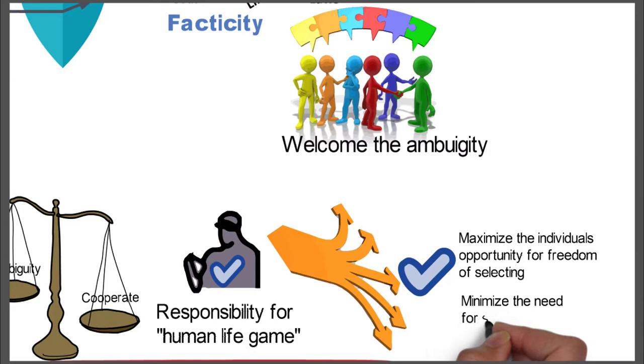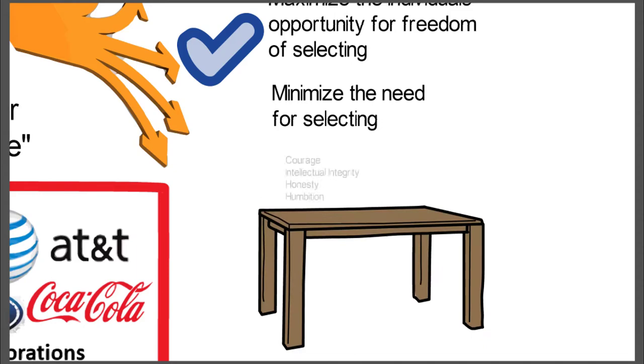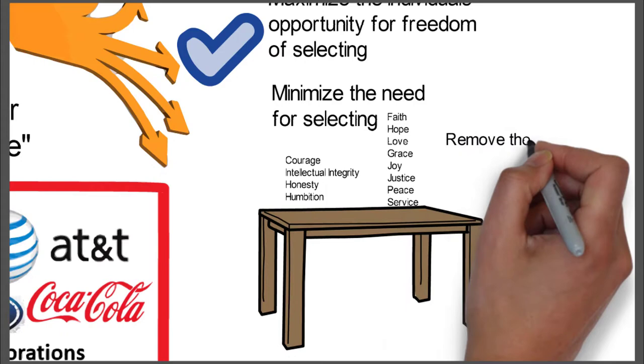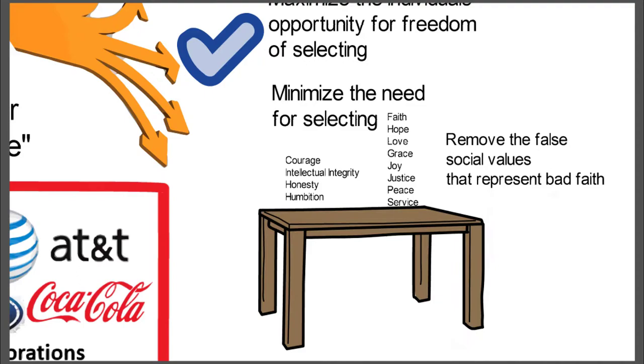You can minimize the need for selecting by basically if you take the table of values and you take values like faith, hope, love, grace, joy, justice, peace, and service. And if we remove the ones that are false social values that represent bad faith, then you really only have to worry about minimizing the need for selecting things that regards to courage and intellectual integrity, honesty, and ambition.